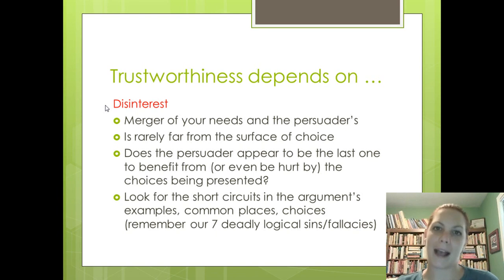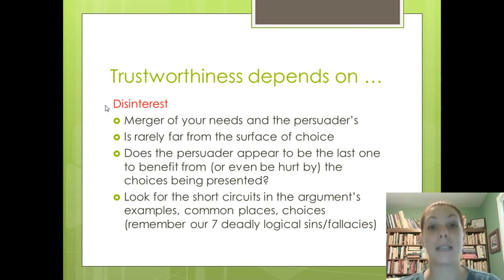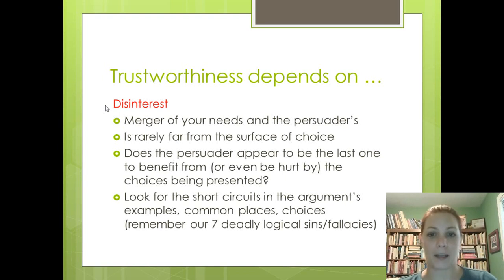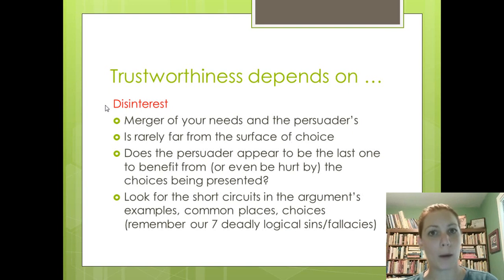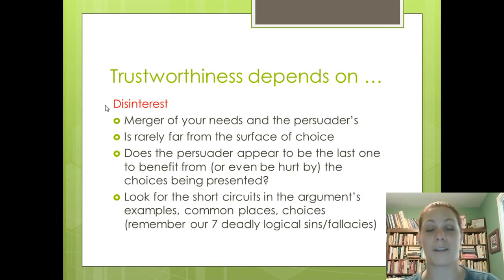You're going to want to ask yourself: does the persuader appear to be the last one to benefit, or perhaps even be hurt by the choices being presented? You'll want to look for the short circuits in the argument's examples, commonplaces, and choices. Of course, identifying logical sins or fallacies is one really great way to look for these short circuits and identify them.